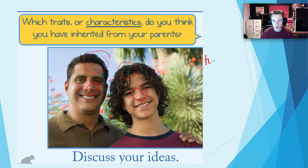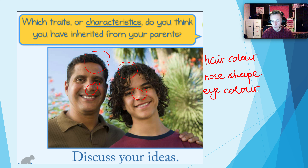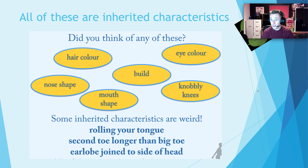So let's make a list of these quickly. The ones we can see are hair colour, nose shape, and eye colour. Now those are just some of the traits that could be inherited. Some others include hair colour, eye colour, your build — i.e. your height and your size, roughly — your nose shape, mouth shape, and your knobbly knees if you've got knobbly knees.